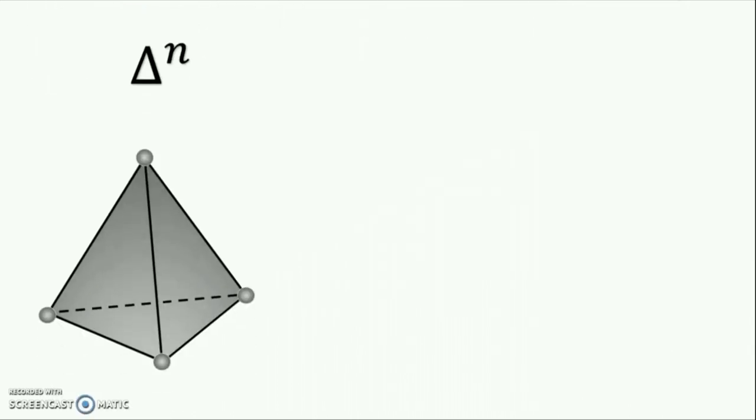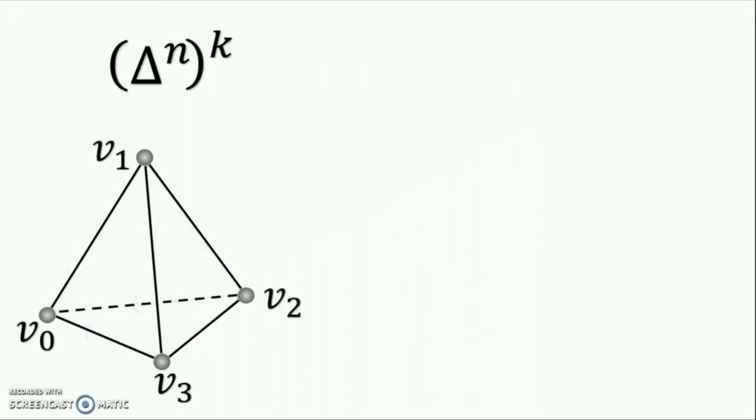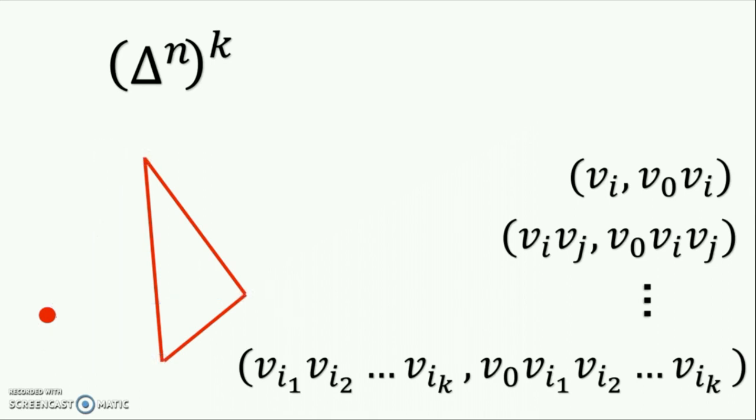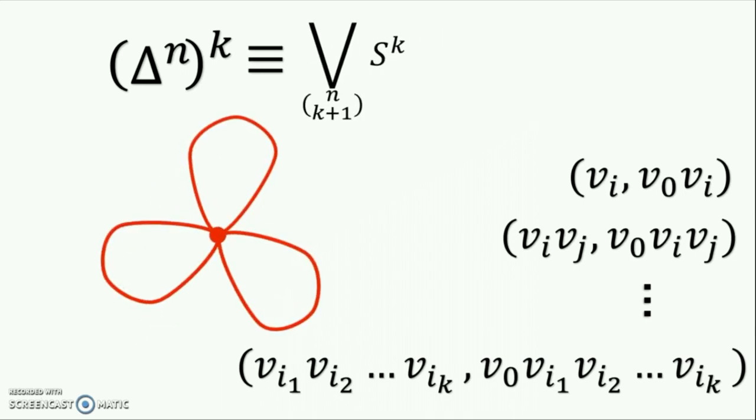One very nice application of this corollary is to compute the homotopy type of the K skeleton of the N-simplex. We can define a gradient vector field by picking a vertex, in this case V0, and creating a matching with this vertex shown on the right. It can be shown that this is a matching with no closed V paths. When the smoke clears, the only things not matched are the vertex and the N choose K plus 1 K simplices. By the main theorem of discrete Morse theory, the K skeleton of the N-simplex is homotopy equivalent to an N choose K plus 1 fold wedge of K spheres.